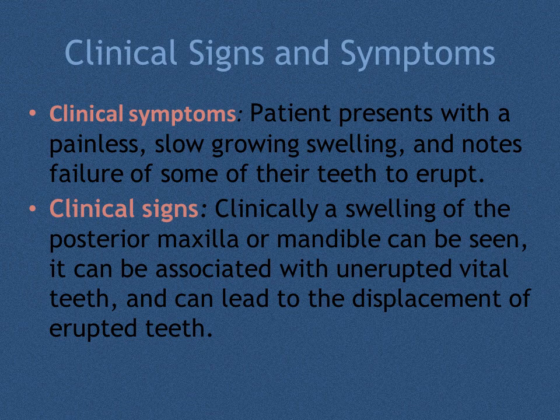Clinically, the patient presents with a painless, slow-growing swelling and notes failure of some of their teeth to erupt. A swelling of the posterior maxilla or mandible can be seen, and it can be associated with unerupted vital teeth and can lead to the displacement of erupted teeth.